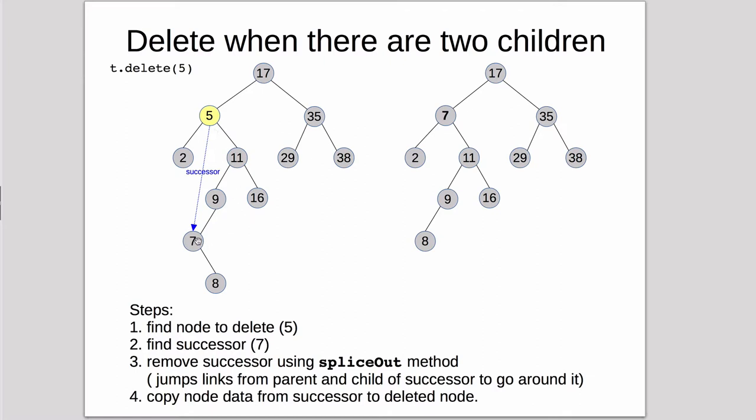But since the 5 and 7 are right next to each other, you can replace 7 for 5 and not change the tree structure, except for having to link any children of 7 around here, so that 8 would have to point up to 9, and 9 would have to point to 8.